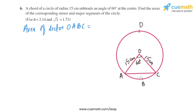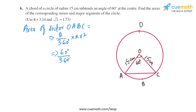To find the minor segment area, we find the area of the minor sector OABC and subtract the area of triangle OAC. The formula for the area of a sector is θ/360° × πr². With θ = 60°, that is 60/360 × 3.14 × 15², giving us the area of sector OABC = 117.75 square centimeters.